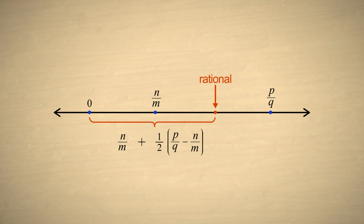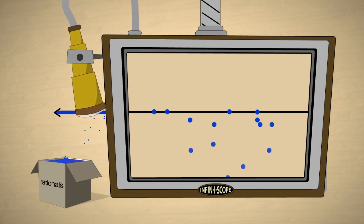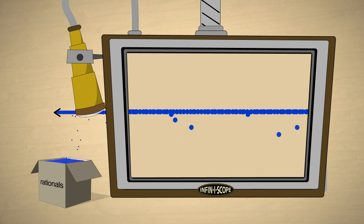So we have proven that between any pair of rational numbers is another rational number. This means that there are an infinite number of rational numbers between any pair of rational numbers and therefore an infinite number in any region of the number line. All the points representing rational numbers blend together to look like a solid line going off to infinity in both the positive and negative directions. No matter how close we zoom into any region on the number line we will always find an infinite number of rational numbers.